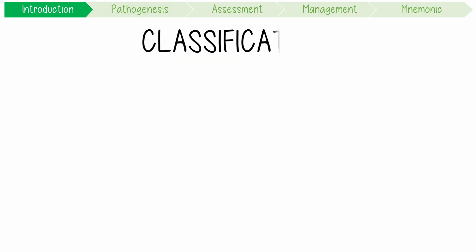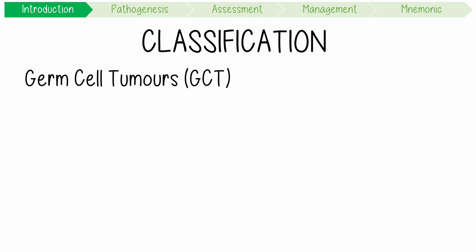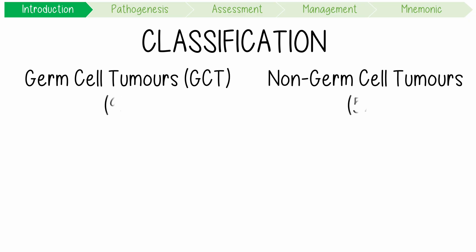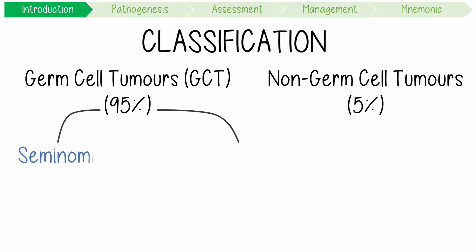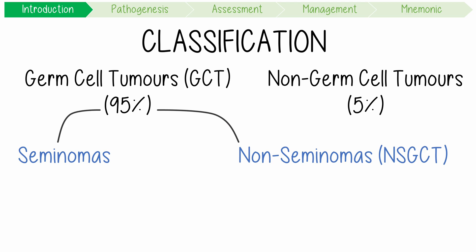Testicular cancer is classified into germ cell tumours (GCTs) and non-germ cell tumours. 95% are GCTs, which can then be further divided into seminomas or non-seminomas, roughly in a 50-50 ratio.